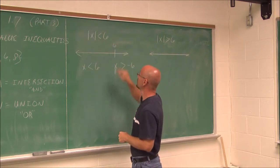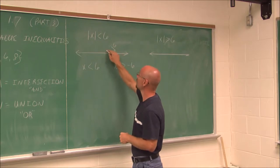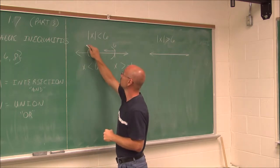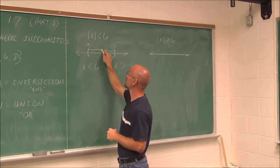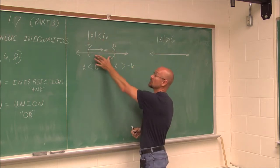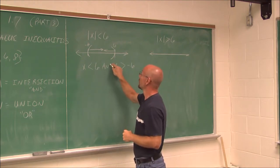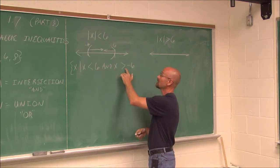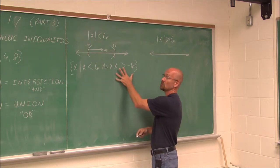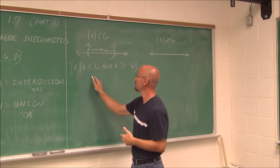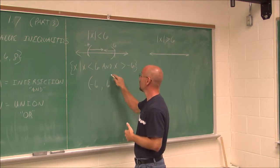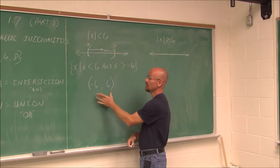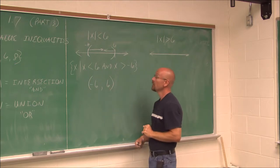x is less than 6, so if this is 6, x is any value less than 6. If x is greater than negative 6, here's negative 6 on our number line and any value greater would be to the right. We can see this less than gives us an AND statement. So if we were to write this in set notation: x such that x is less than 6 and x is greater than negative 6. We have set notation, graphic notation, and we can also write that in interval notation. From negative 6 to 6 are the solutions — the intersection of these values.